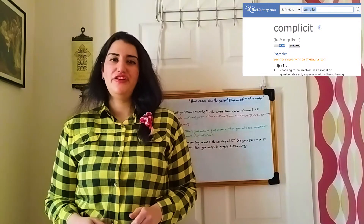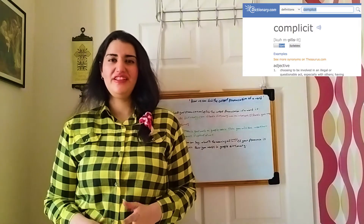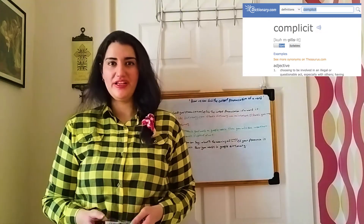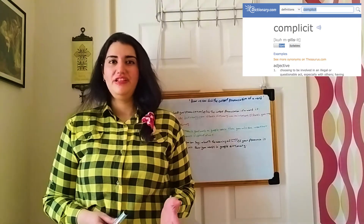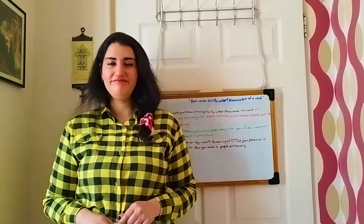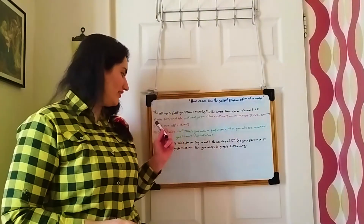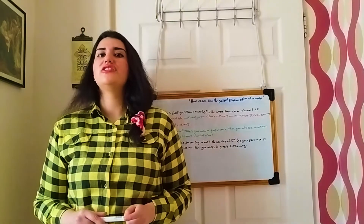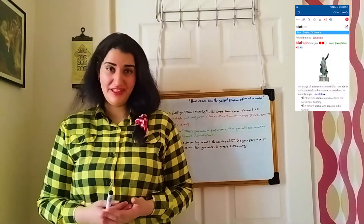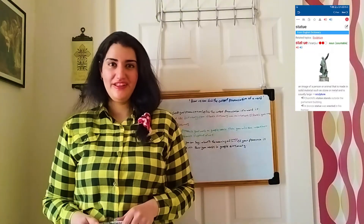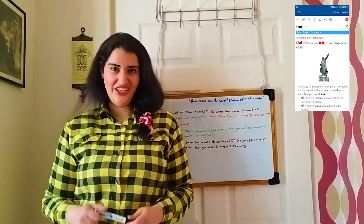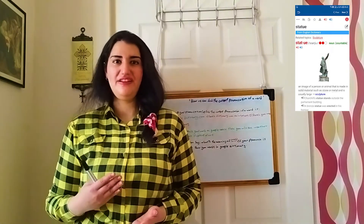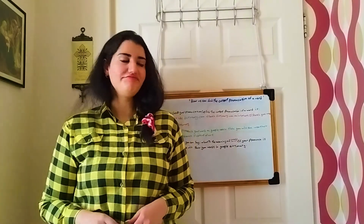All you have to do is search dictionary.com on the internet and then search your word. You can see different pronunciations of your word, whether in UK English or US English. The second method is the Longman app dictionary. Open your Longman app dictionary and search your word to hear pronunciations in both UK and US English.